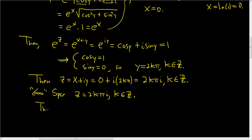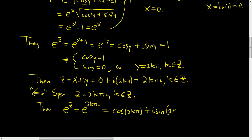So then e to the z is simply e to the 2k pi i. And that's equal to — using Euler's identity — cosine of 2k pi plus i sine of 2k pi. The cosine of 2k pi is 1, and the sine of 2k pi is 0. So we end up with 1. So we've shown that e to the z equals 1, and we've proven our lemma.